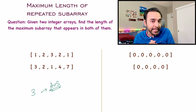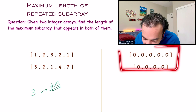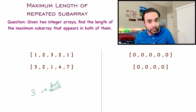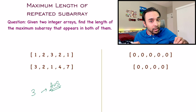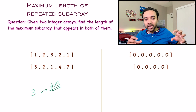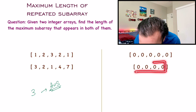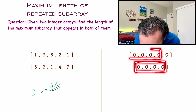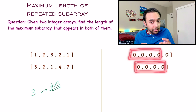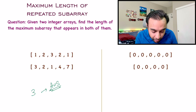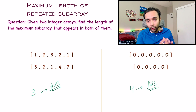Similarly, let us look at our second test case. In our second test case, I again have two arrays. If I ask you what is the length of the longest contiguous subarray, you can find these four elements in both of my arrays. So its length will be 4. This is how the problem statement looks.